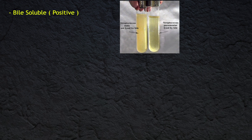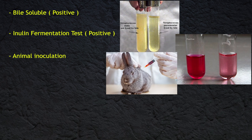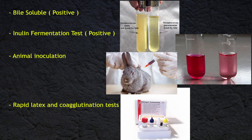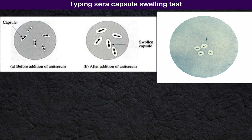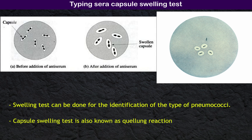S. pneumoniae is bile-soluble. The inulin fermentation test is positive. Animal inoculation can also be used for diagnosis. Rapid latex and coagglutination tests are available to identify capsular pneumococcal antigen. By using typing sera, the capsule swelling test — also known as the Quellung reaction — can be done for the identification of the type of pneumococci.